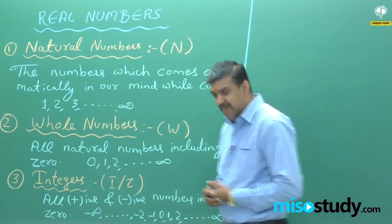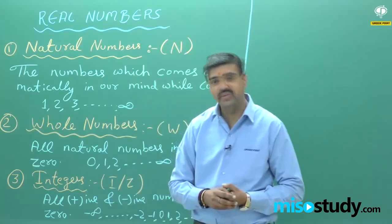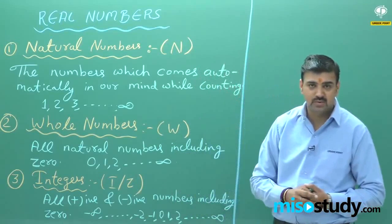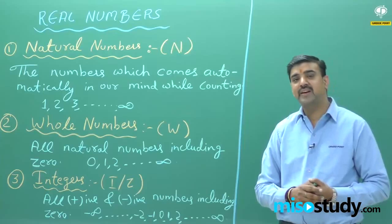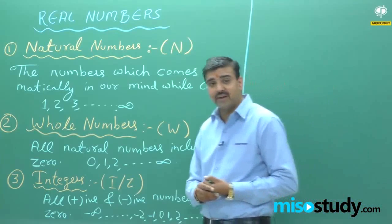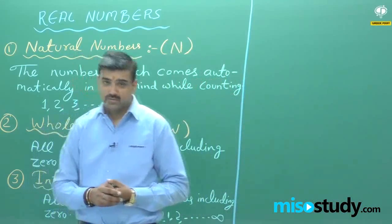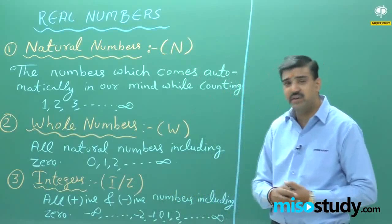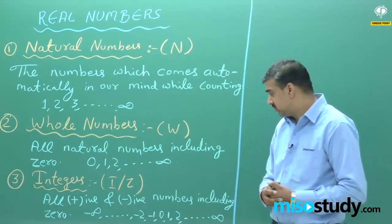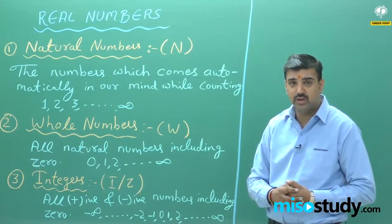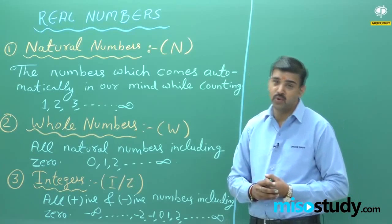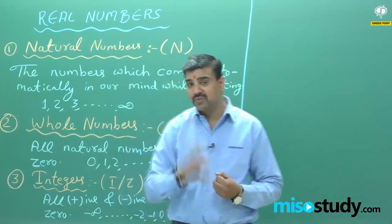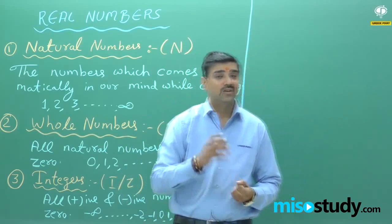Now let us change to division. 4 divided by 2 gives 2, 10 divided by 5 gives 2, 15 divided by 3 gives 5 — we are getting numbers that are on the integer number line. But say for example 3 divided by 2 — there is no such number in integers. To overcome this problem, we introduce a new number series called rational numbers.